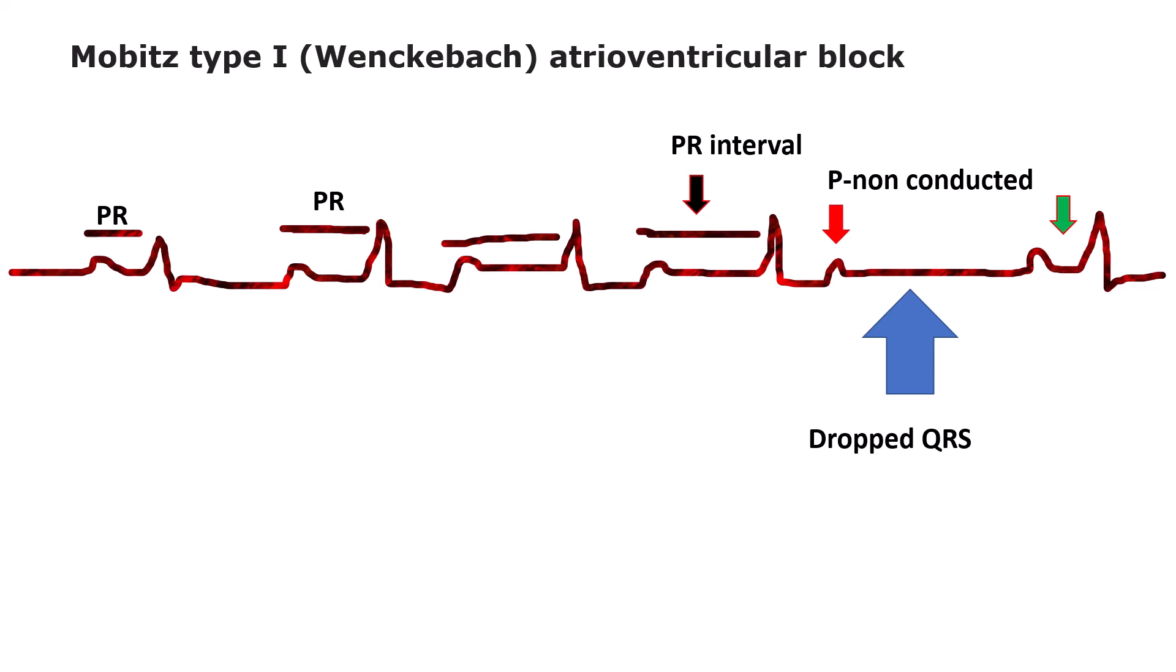The characteristic ECG signature of classic AV Wenckebach block is progressive lengthening of the PR interval from one beat to the next until a QRS complex is dropped. Of note, the PR interval following the non-conducted P wave, the first PR interval of the new cycle, is always shorter than the PR interval of the beat just before the non-conducted P wave.